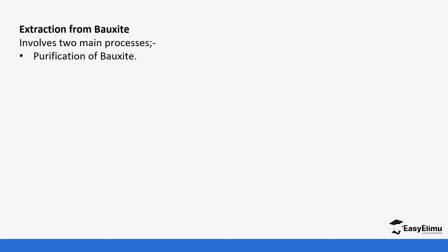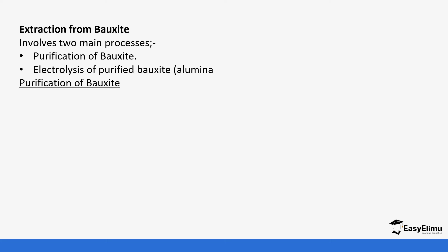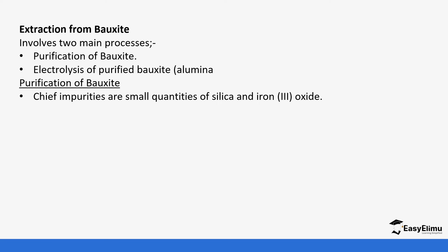The extraction of bauxite is done in two processes: the purification of bauxite and then the electrolysis. In the purification stage, the chief impurities are silica and iron(III) oxide. The goal is to remove these impurities so you remain with a higher concentration of the ore to extract using electrolysis. This purification is all about removing the impurities.